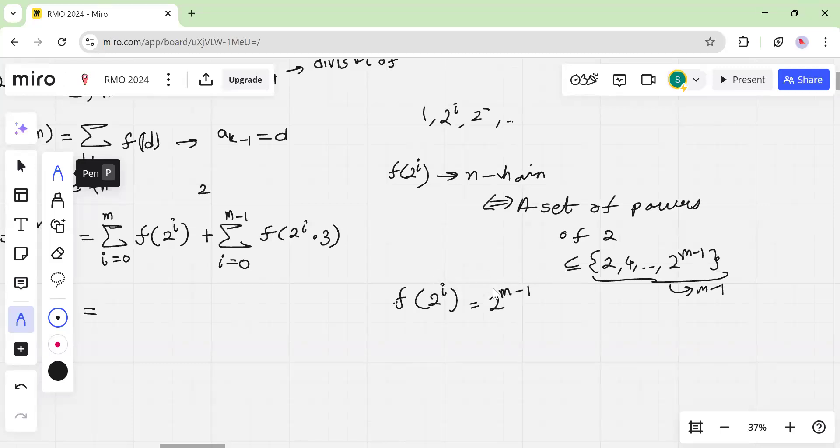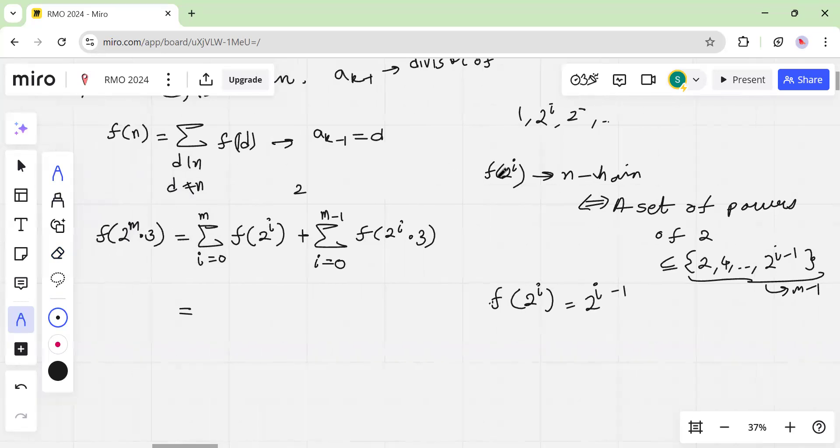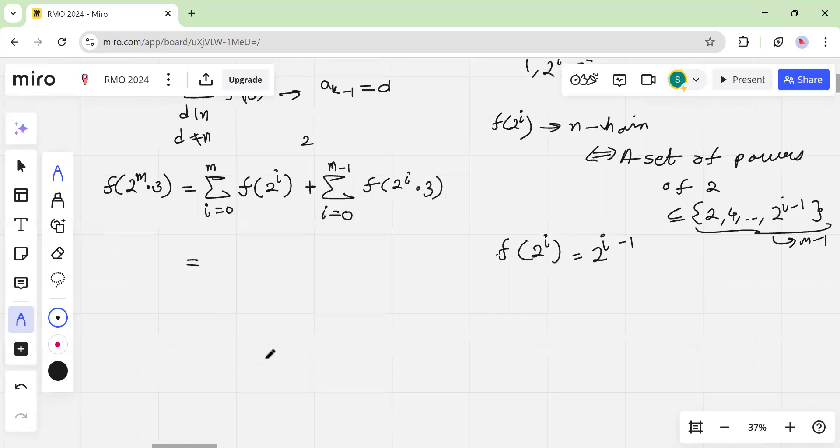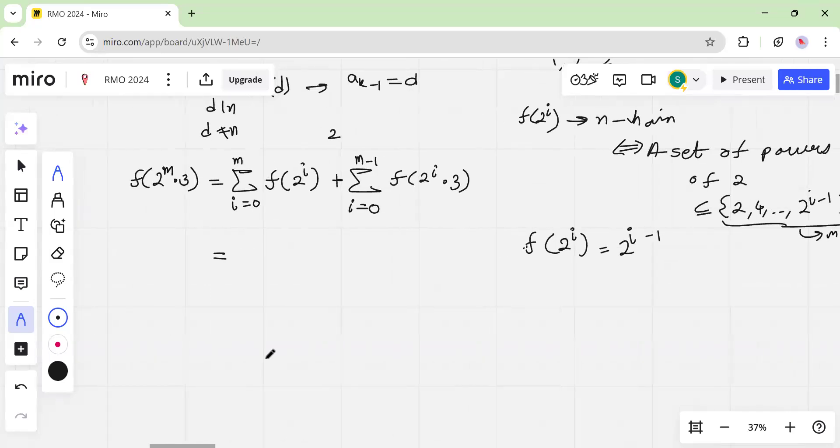Okay, sorry, 2 to the i minus 1. This is i minus 1, this is also i minus 1. Okay. Nice. So now let's just evaluate sums.